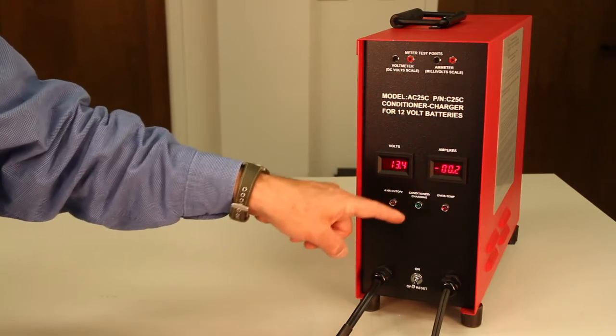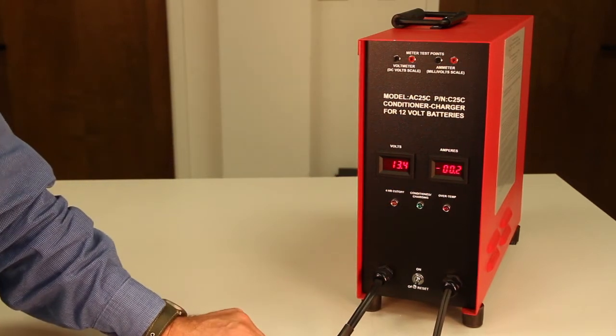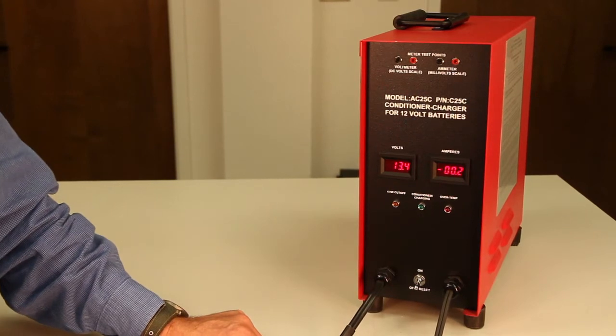You have your conditioned charging light and, of course, your over-temp light. If it ever gets above 50 degrees C, it'll shut the unit off.